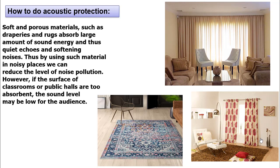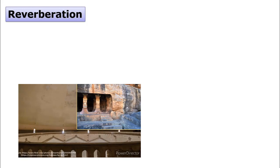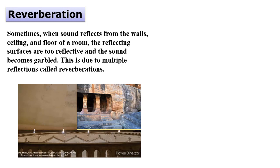Sometimes we need to face another phenomenon called reverberation. What is reverberation? It means the persistence of sound. When you go to a large hall or a church, you hear your voice echoing back. This happens because when sound reflects from the walls, ceiling, and floor of a room, and the reflecting surfaces are too reflective, the sound becomes garbled. This is due to multiple reflections, and this phenomenon is called reverberation.